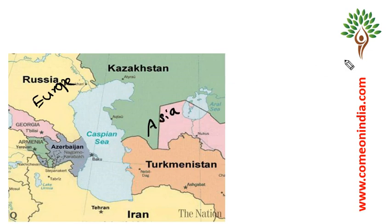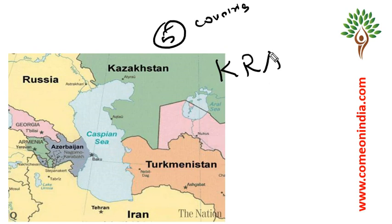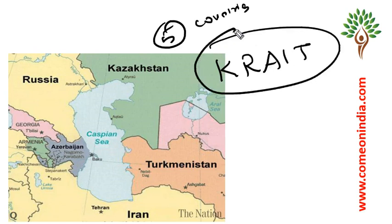The Caspian Sea is surrounded by five countries, which can be asked in the prelims examination. We will use the mnemonic CRATE for the countries surrounding the Caspian Sea.